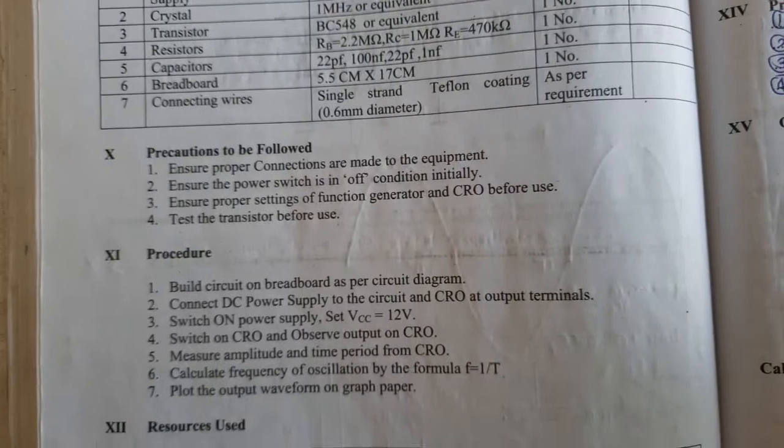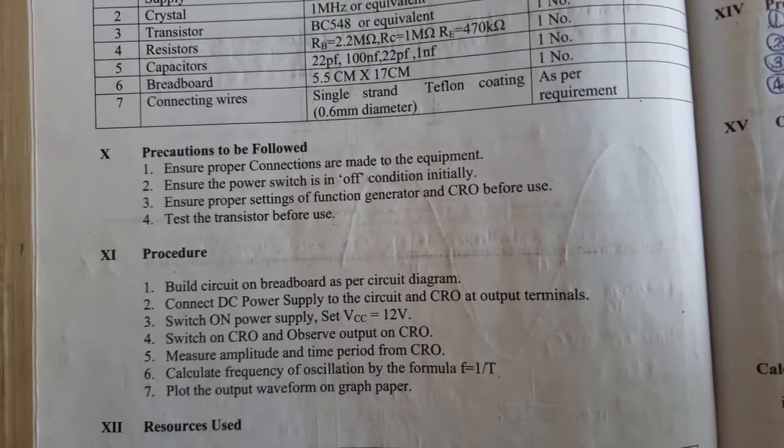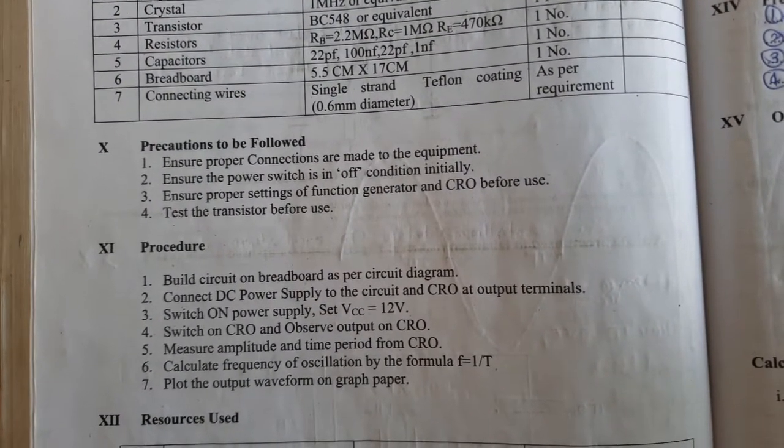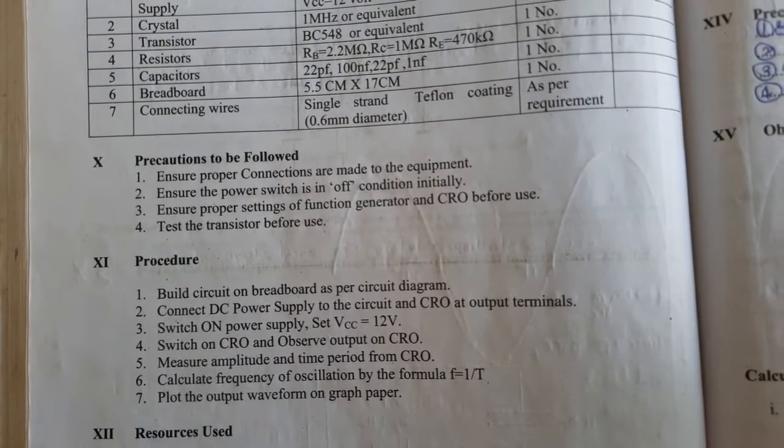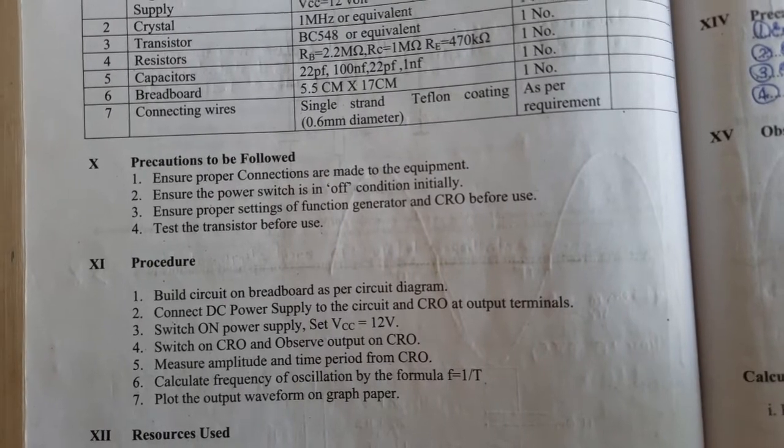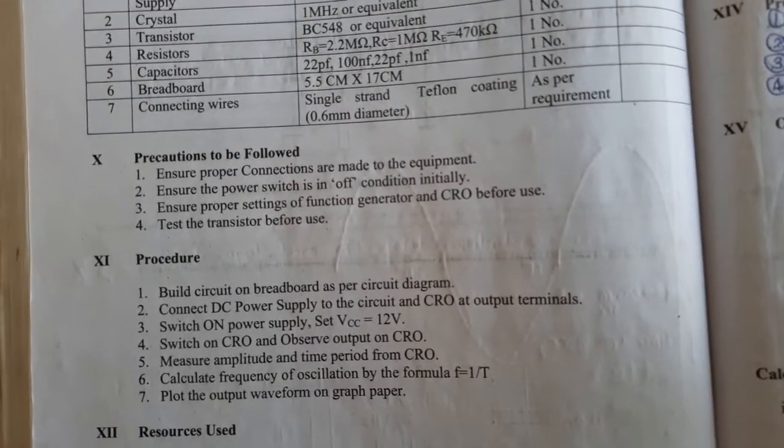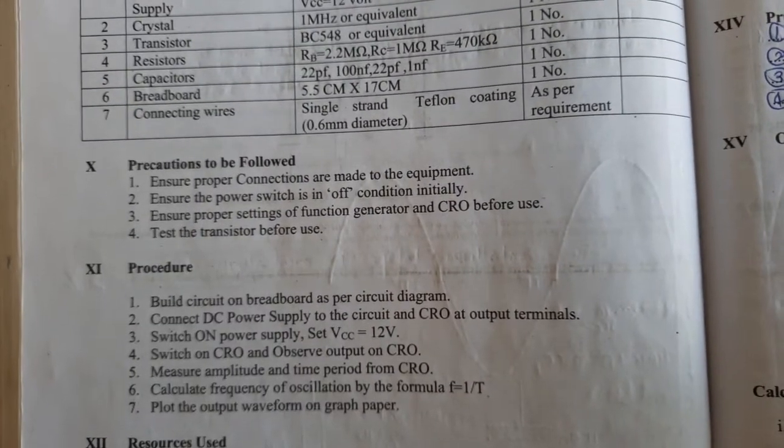We will see how it is done on the kit. We will switch on the power supply set to 12 volts, then switch on the CRO and see the output. We will measure the amplitude and time period on the CRO, then calculate the frequency using the formula F = 1/T.